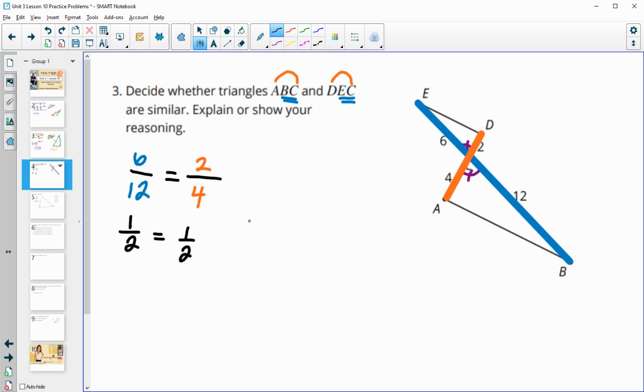So then this means that the triangles are similar by side angle, side similarity.